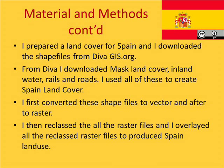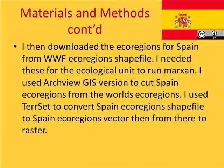I used all of these to create Spain's land cover. I first converted these files to vector and then to raster. I then reclassified all the raster files and overlaid all the reclassified raster files to produce Spain's land use. I then downloaded the ecoregions for Spain from the WWF ecoregions shapefile. I used ArcView GIS to cut Spain's ecoregions from the world ecoregions, and converted the Spain ecoregions shapefile from vector to raster.